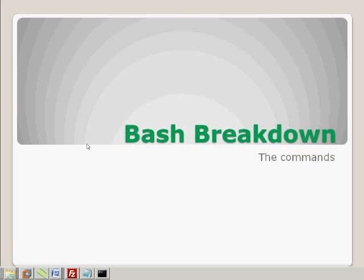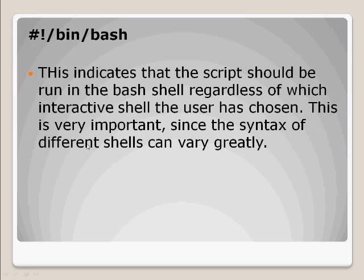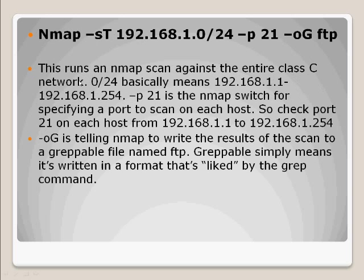Let's break down the bash script and see exactly what was happening. The first line is the shebang — #!/bin/bash — specifying which environment we're going to run in. The second line is the nmap scan: nmap -sT 192.168.1.0/24 -p 21 -oG ftp. We're doing a TCP connect scan on the entire network range, specifying port 21, and writing the results out to a greppable file named FTP using -oG.